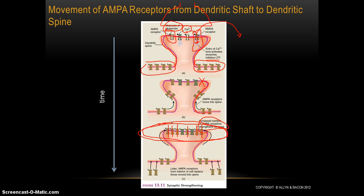All of these AMPA receptors control sodium channels. Basically what this does is provide many more doorways for sodium to come rushing into the cell. Sodium is a positively charged ion, so it gives more doorways through which all that positive charge can come flooding in, allowing much more sodium to flood into the cell in response to stimulation from the presynaptic neuron. This allows for much easier stimulation of the postsynaptic neuron, and that contributes to the strengthening of the synapse — that's long-term potentiation.